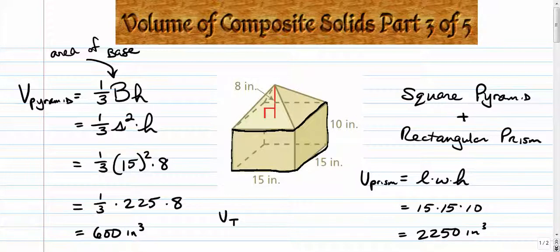And we're going to add those two together. The total volume is the sum of these two. So that's 2850. And that would be how much volume there is in the entire composite solid.